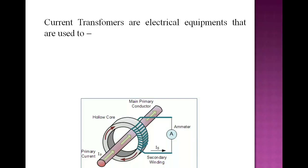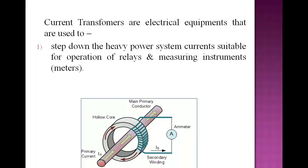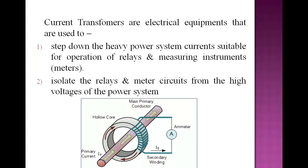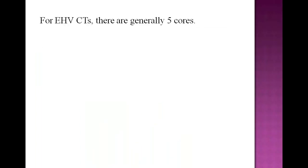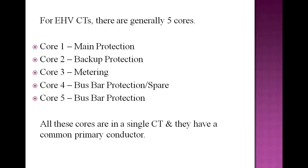Current transformers are electrical equipment used for two reasons: to step down heavy power system current to values suitable for operation of relays and measuring instruments, and to isolate the relays and meter circuits from the high voltages of the power system. For EHV CTs, there are generally five cores — first for main protection, second for backup protection, third for metering, and fourth and fifth for bus bar protection. All these cores are in a single CT with a common primary conductor.